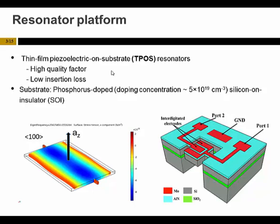In this picture you can see a three-dimensional view of a TPOS resonator with different layers. We have an SOI substrate and also two top and bottom electrodes and a layer of aluminum nitride as the piezoelectric. In this picture you can also see the lateral extension mode shape of our resonators.